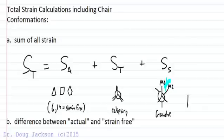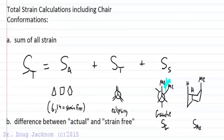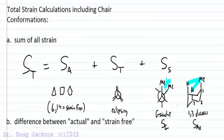In the case of cyclohexane, we can also have 1,3-diaxial interactions — axial strain — where groups in axial positions, such as a methyl group, can interact three carbons apart. This is 1,3-diaxial because it happens one, two, three positions away, and you always get two interactions at a time when you have a large group in the axial position. So steric strain has a couple of components, and total strain is the sum of all the different parts added together.